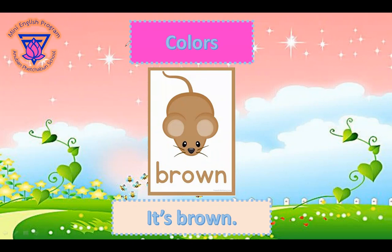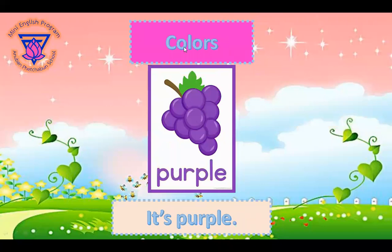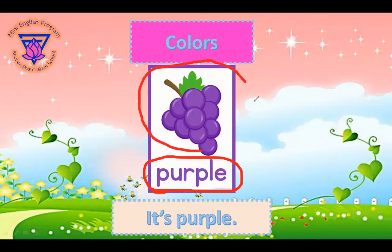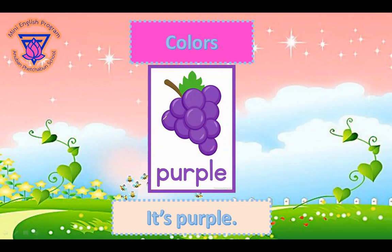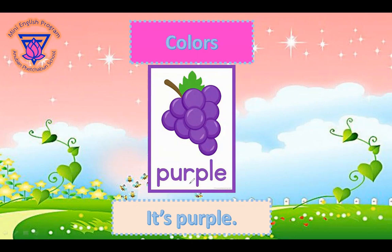Next one is purple. What fruit is this? Is this an apple? Is it durian? Very good — grapes! The color of the grapes is purple. It's purple.